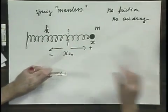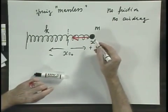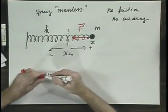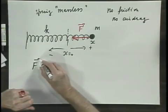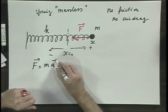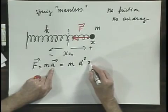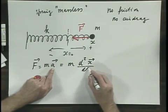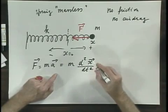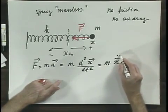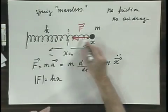The spring has a spring constant k, and when I bring this object out over a distance x, there is a restoring force — the spring force — that is driving it back to equilibrium. F, which is that force according to Newton's law, equals ma. A is the second derivative of x versus time, so I can write m times d²x/dt², or using dot notation, m x double dot. The magnitude of F equals kx if it is an ideal spring, if Hooke's law holds.